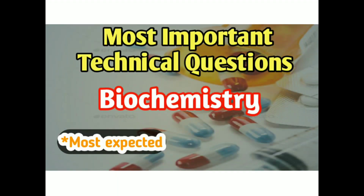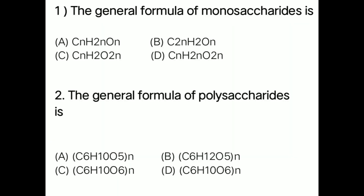Question 1: The general formula of monosaccharide is option A CnH2nOn, option B C2nH2nOn, option C CnH2O2n, option D CnH2nO2n. The correct answer is option A: CnH2nOn.